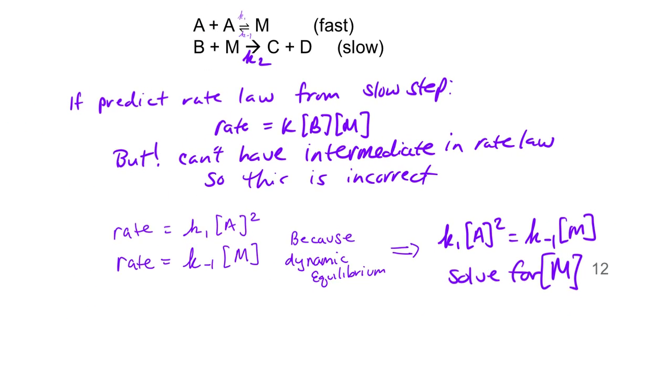Given that, we can now solve for M. We're going to say that M is equal to - I'm going to divide both sides by K minus one - K1 over K minus one times A squared. Now we can take this and plug it into our initially predicted rate from the slow step.